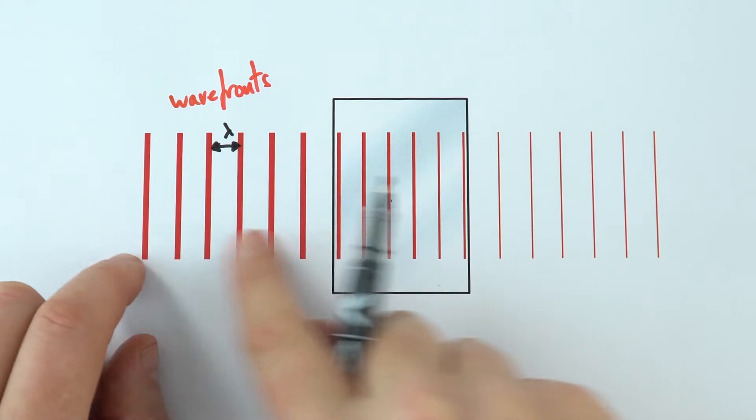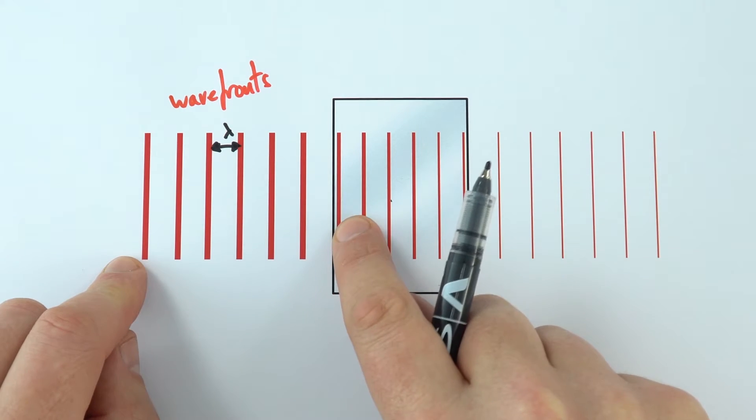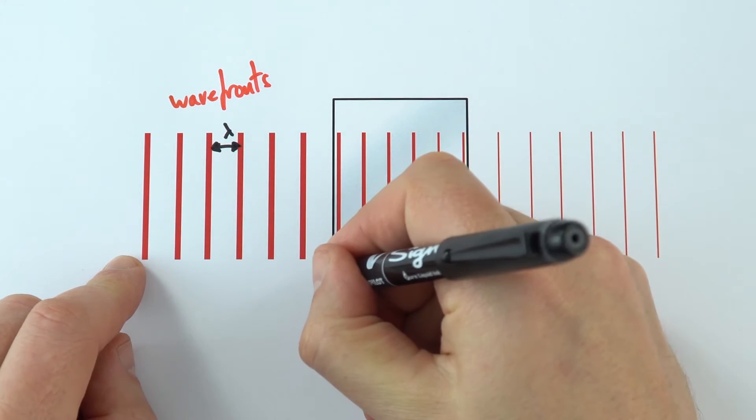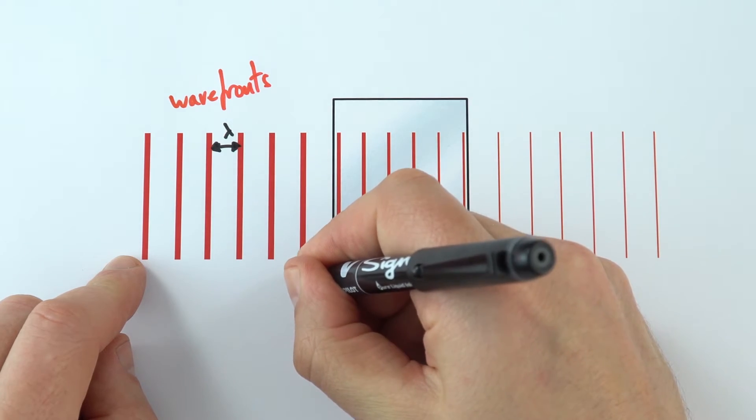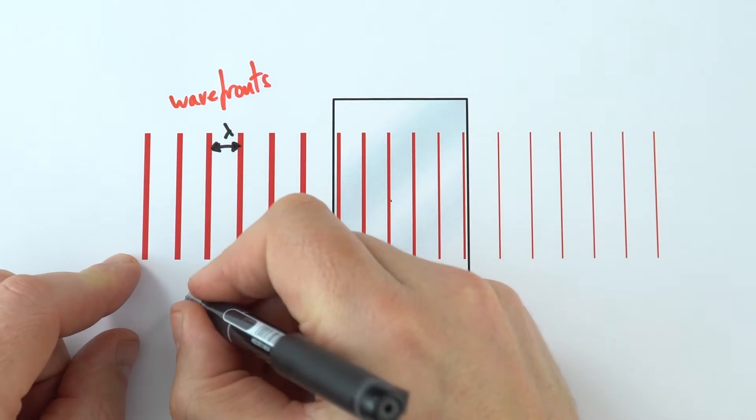And what we can see is that when a wave hits another medium, sometimes some of that wave is reflected back again. And this is what we call reflection.